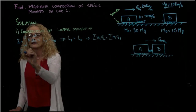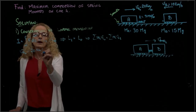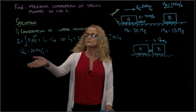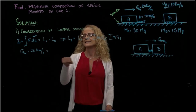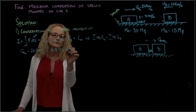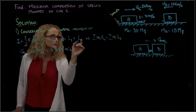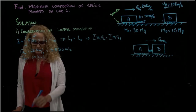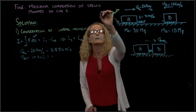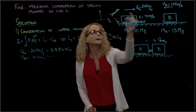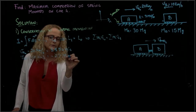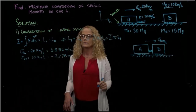Velocity A, which is 20 kilometers per hour, must be converted to meters per second. We multiply by 1,000 and divide by 3,600, giving us 5.556 meters per second. Velocity B at the initial position is 10 kilometers per hour. Including the sign — since it moves in the negative x-direction — it converts to negative 2.778 meters per second. So now we have our velocities in proper units.